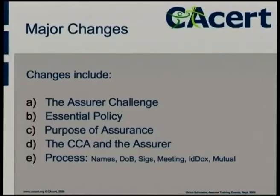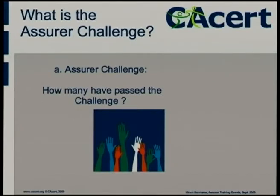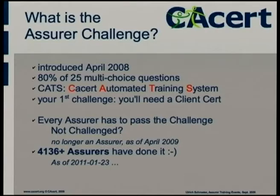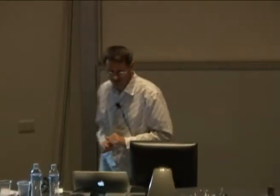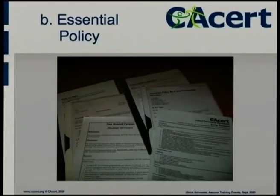Now we're talking about the specific things that the Assura needs to know. The Assura Challenge: 80% of 25 questions; 4,136 had done it as of last night. People are doing it all the time. You need to know about the essential policy. The way the policies work, we do have a policy group that creates these binding documents — it is a democratic process; you get in there and vote on things. We've just done a change recently to the Dispute Resolution Policy — it took two weeks to get through and cleared as of this weekend. It's an ongoing process. However, the essential policy set that you need for assurance and that we need for audit is complete and working.